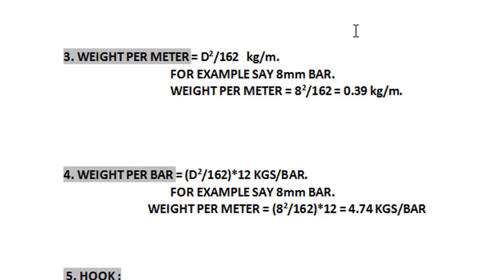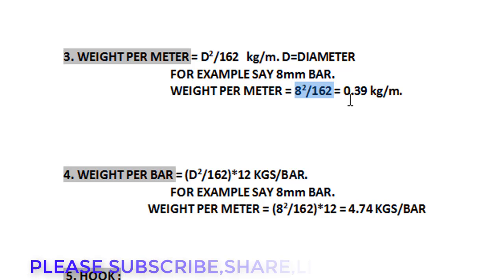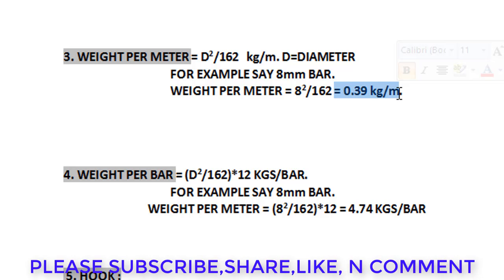The weight per meter formula is d² / 162 kg per meter. For example, if you have an 8mm bar, d is the diameter, so it is 8² / 162, which equals 0.39 kg per meter. This means the 8mm bar weighs less than half a kilogram per meter.